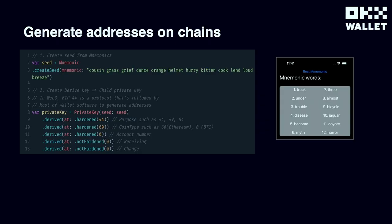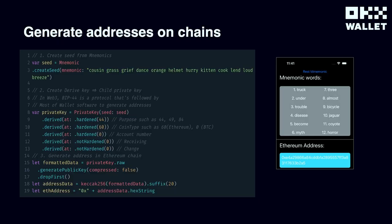Let's see how to do this in code. We take the mnemonic generated from the last step and use it to create our master key. Using that master key, we follow the BIP44 derivation path: first level is 44, second layer for Ethereum is coin type 60, third layer is account index 0. After deriving the private key for the Ethereum chain, we generate the address by computing the public key, running it through the Keccak256 cryptographic function, and taking the first 20 bytes, then appending the prefix following the Ethereum standard.